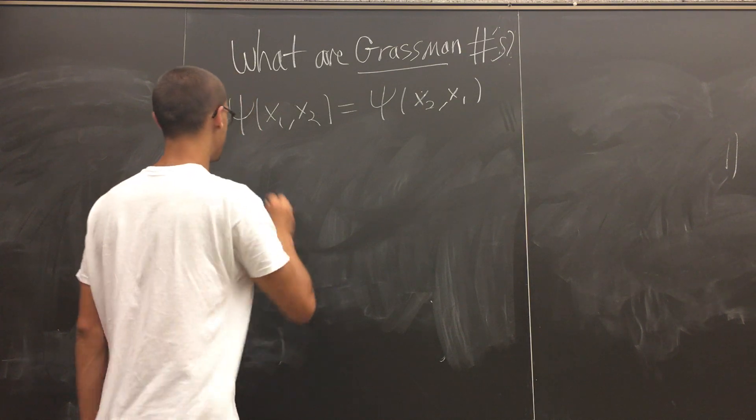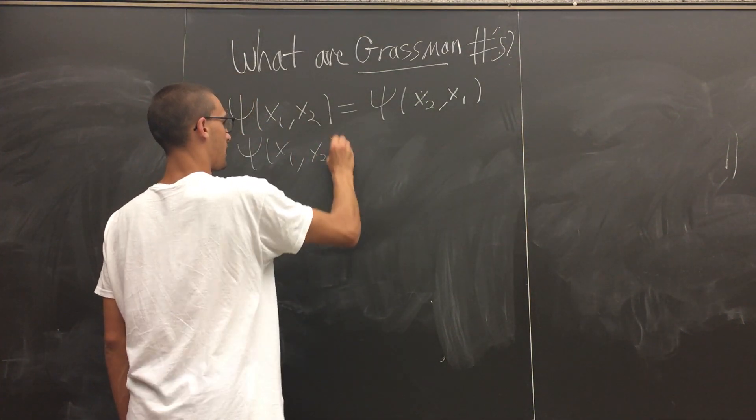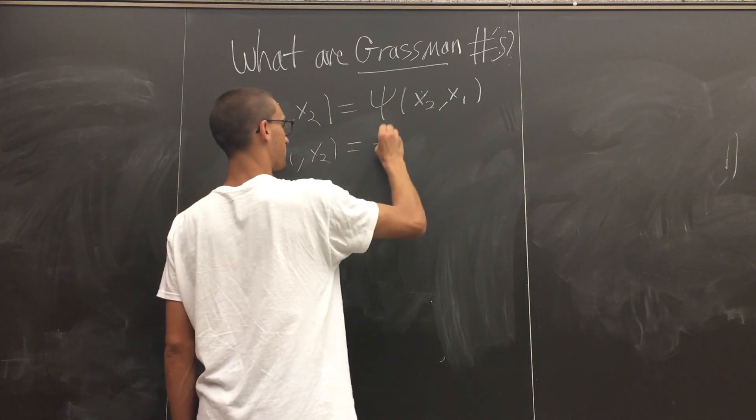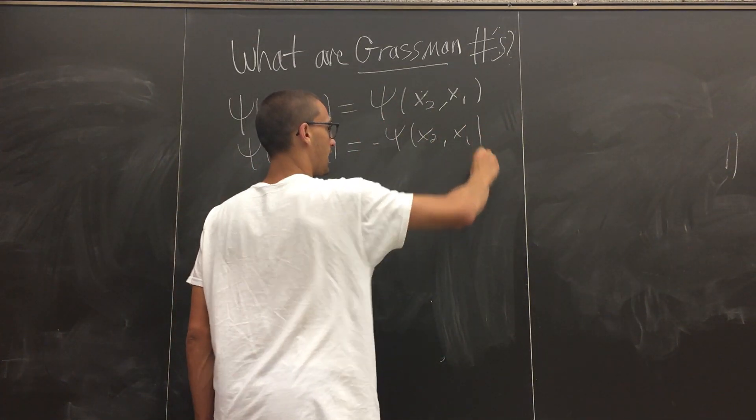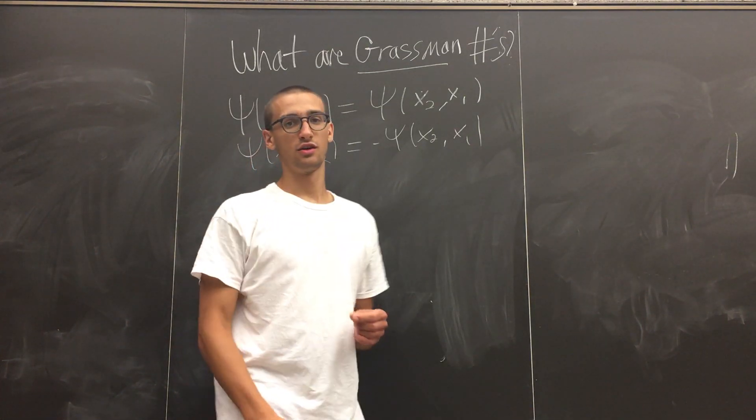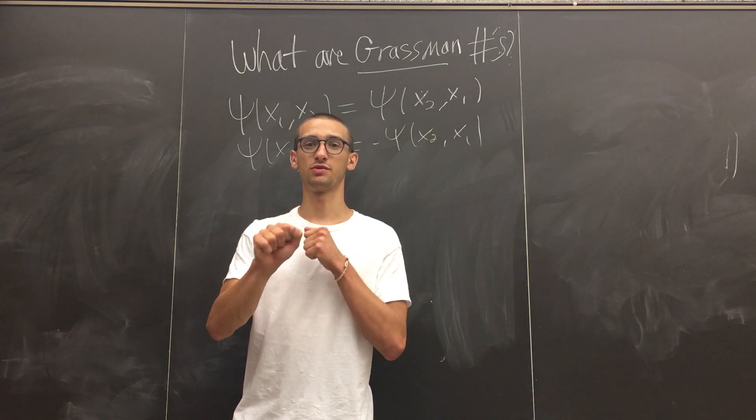However, with fermions, that's not the case. If you swap the first fermion with the second fermion, it picks up a minus sign, which results in a high repulsion between the fermions.